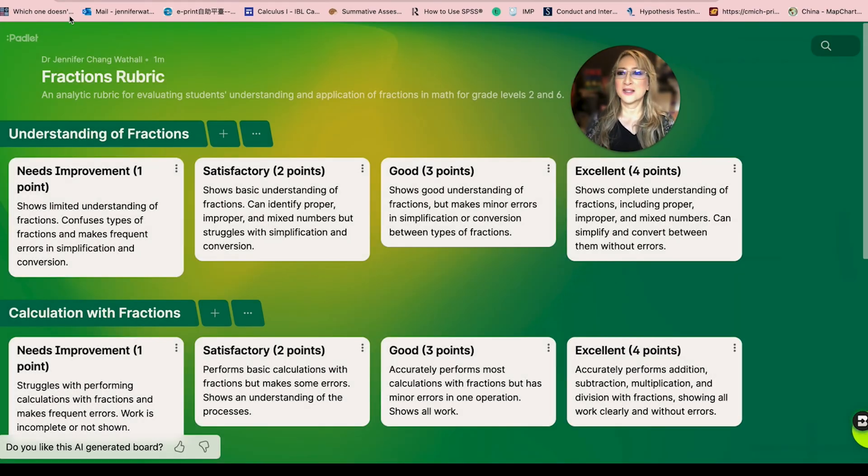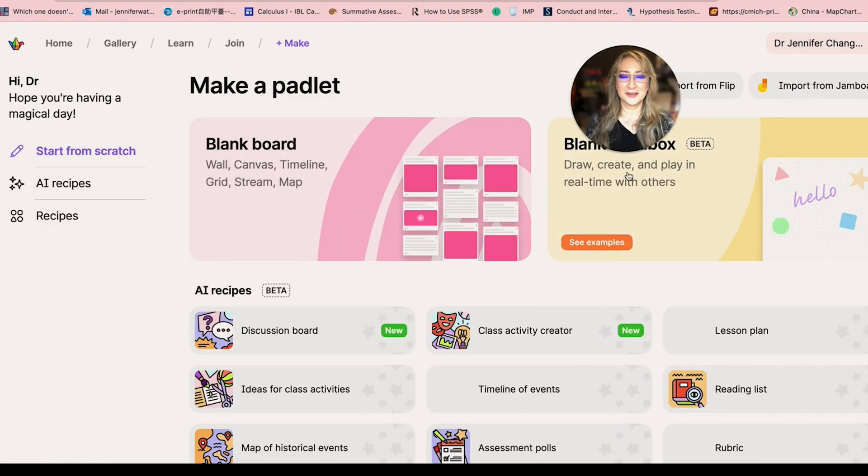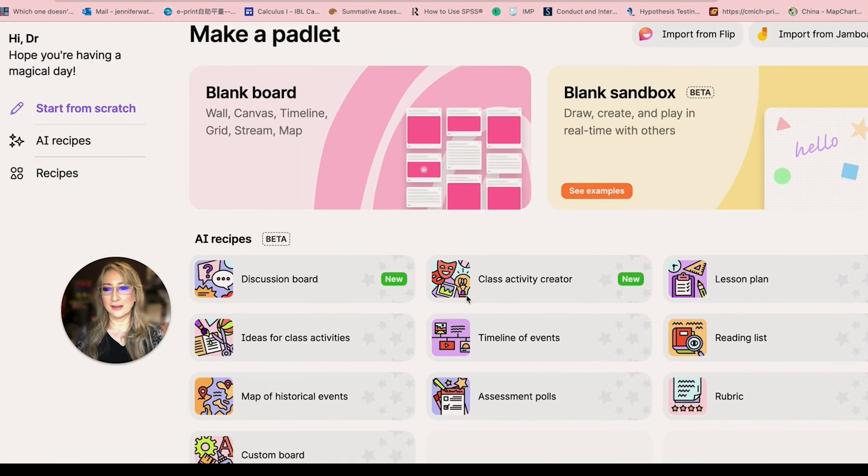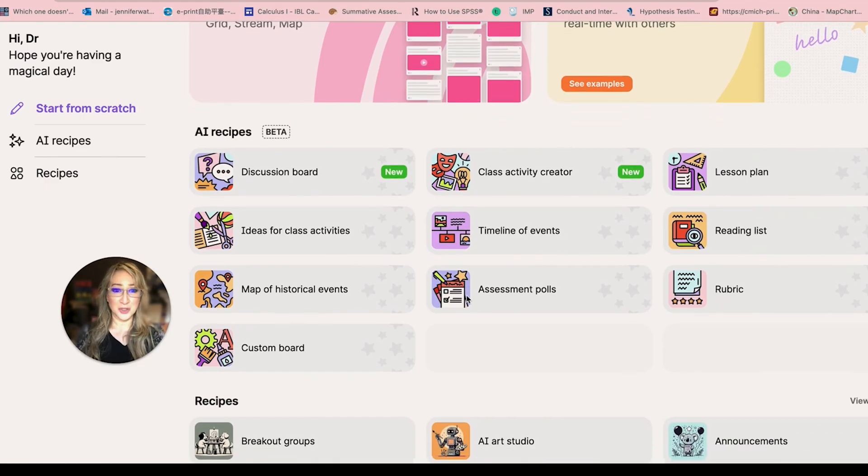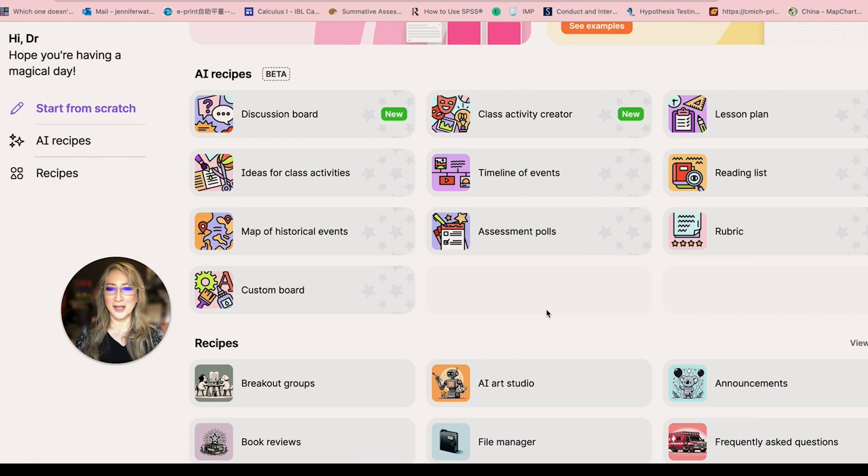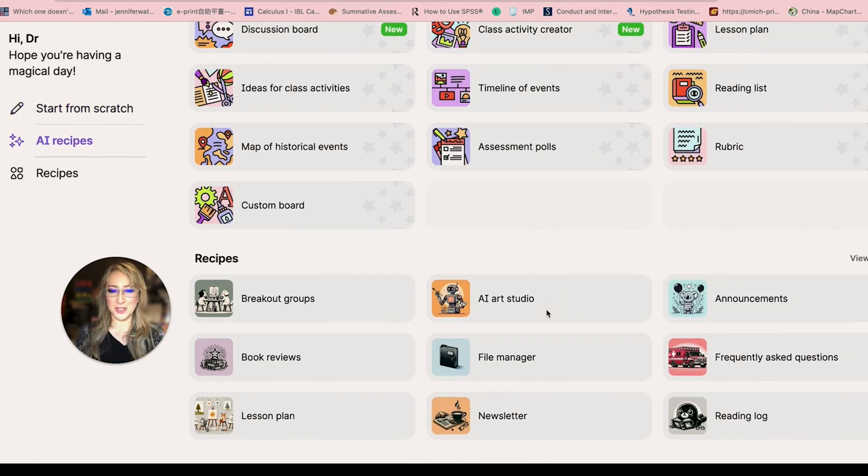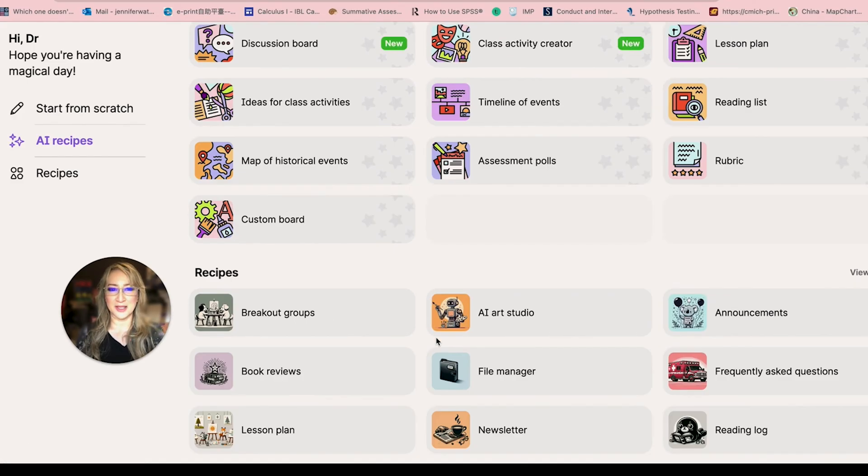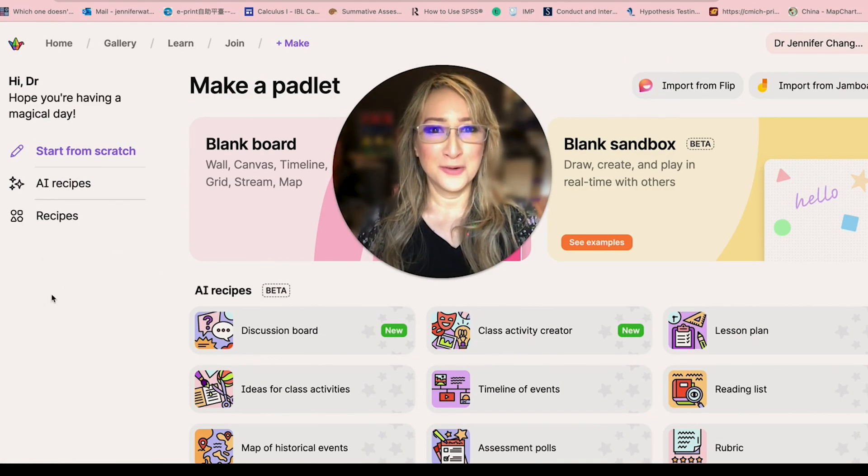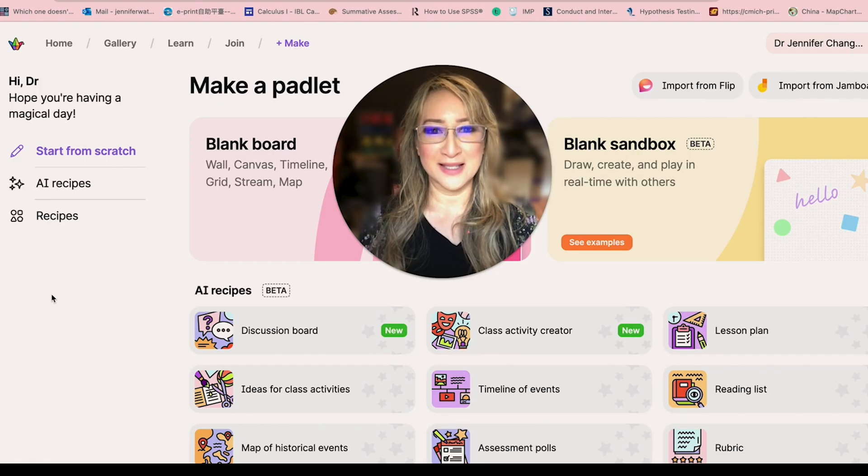Let's go back now to the dashboard and you can see that there are a lot of AI recipes here in beta. There's the discussion board which is new, class activity creator new. I think I've discussed this in a previous video. Recipes, breakout rooms, AI art studio, lesson plans, book reviews, etc. I know that Sandbox is going to be released in August.